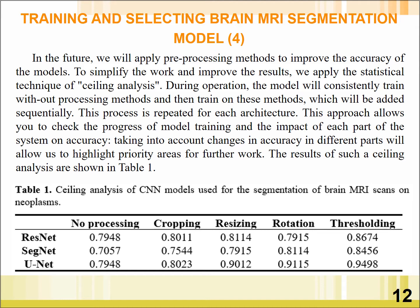This process is repeated for each architecture. This approach allows us to check the progress of model training and the impact of each part of the system on accuracy. Taking into account changes in accuracy at different stages allows us to highlight priority areas for further work. The results of such ablation analysis are shown in Table 1, and we can see that UNET architecture is the best across these five steps.